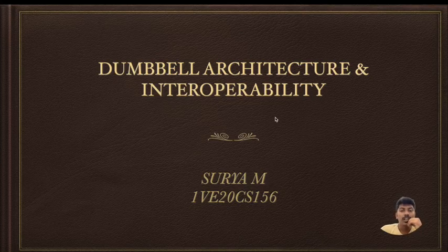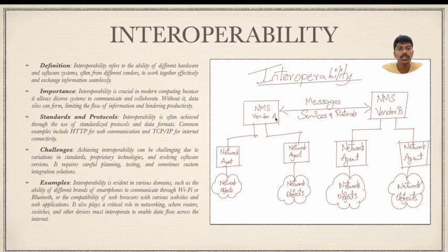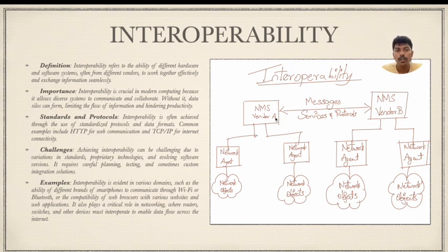Hello guys, welcome back to the channel. Today we're going to be discussing double architecture and interoperability in network management. We'll start by discussing interoperability — the definition of interoperability is the ability of different hardware and software systems, often from different vendors, to work together effectively and exchange information seamlessly.